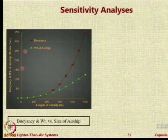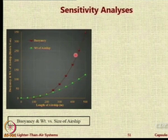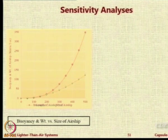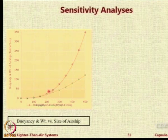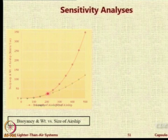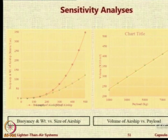See the variation of buoyancy with the length. This is the length axis, this is the weight of the ship, and this is the length variation. One interesting thing is that there is a minimum length of the ship required to overcome its own weight. Below that length, the system will not even overcome its own weight, and you would need extra payload to carry the system. The payload has a linear relationship with the volume.